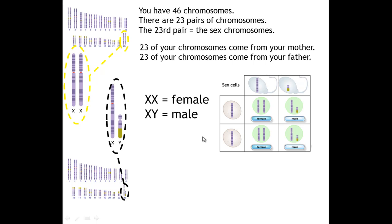What you notice here is that these are both X chromosomes because they are the long ones, and hence the sex of the offspring is female. This one, however, has one X chromosome and one Y, hence male. Here as well you have two Xs, hence female, and on this one an XY and therefore male.